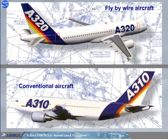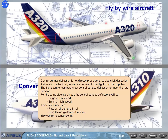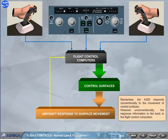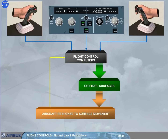A side stick input is a rate of roll demand in roll, and a load factor G demand in pitch. Your control is conventional. Remember, the A320 responds conventionally to the movement of control surfaces. However, unconventionally, the response information is fed back to the flight control computers. The computers process this feedback and adjust control surface deflection to ensure that the maneuver rate demand is executed accurately, meaning control surface deflections may be altered with no change in side stick position.